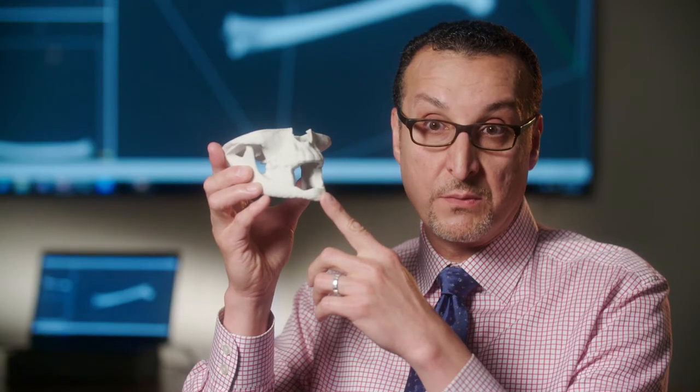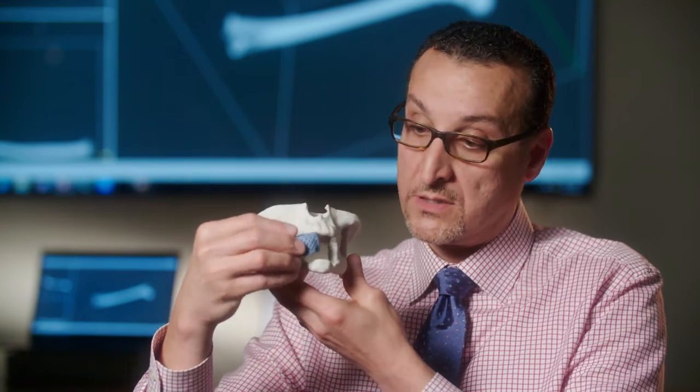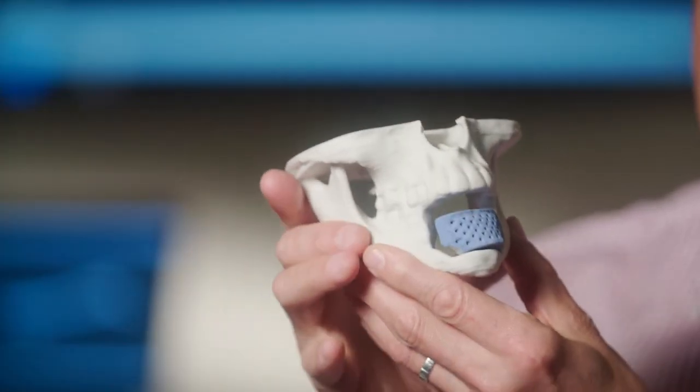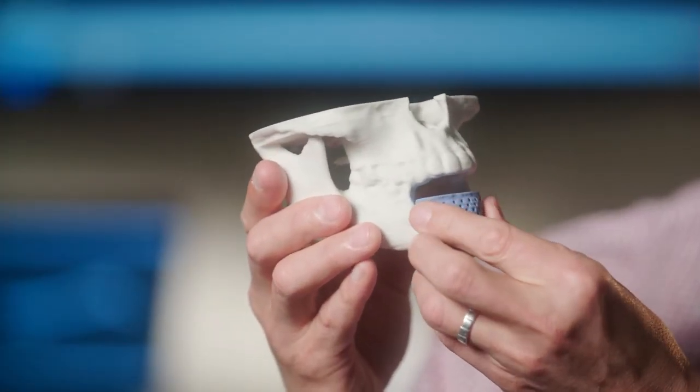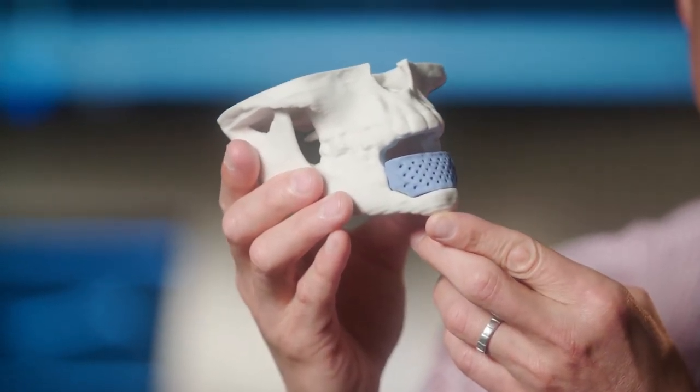Once we were able to do this, we went back to our digital model and created a scaffold that has the anatomy and the dimensions of the bone that we physically resected. We actually printed it on a 3D printer to perfectly fit and align with the bone of that patient.